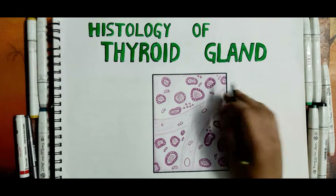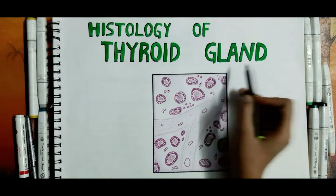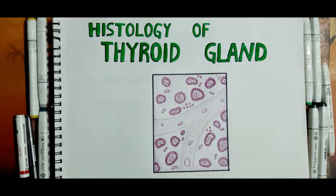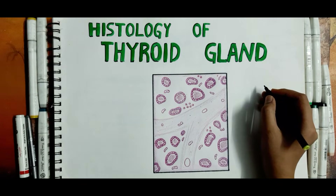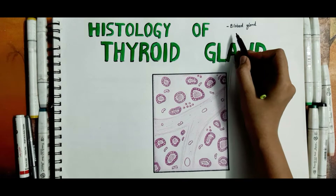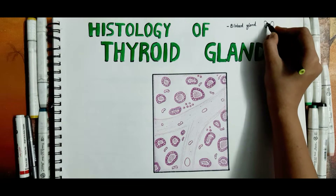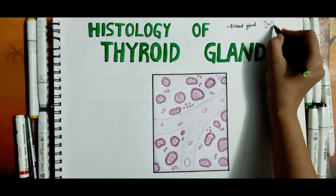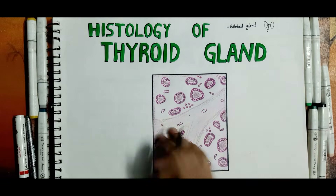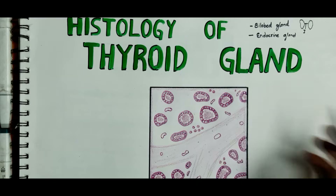Hello guys, welcome back. In this video, let's learn about the histology of the thyroid gland. The thyroid is a bilobed gland; each lobe is situated either side of the trachea. The two lobes of the thyroid gland are connected to each other by the isthmus. This is one lobe of the gland and this is another lobe, and this is the isthmus.